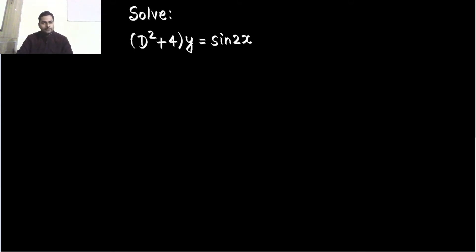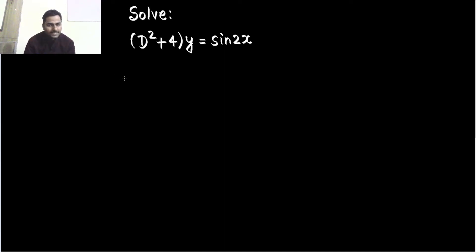Coming to this problem, this is already in a very good form — in symbolic form, the form of capital D. So the first step we are going to follow is to write the auxiliary equation.